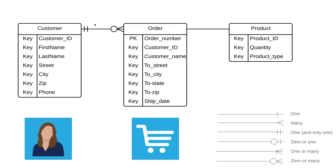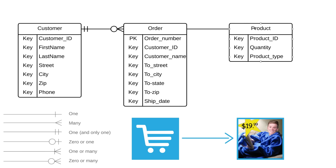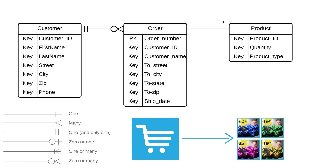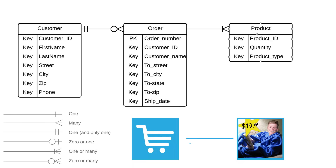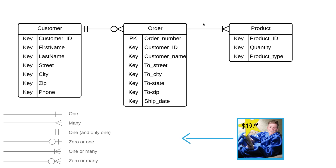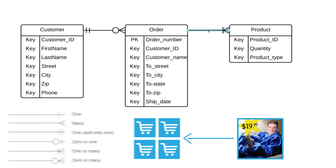Now let's talk about the cardinality between orders and products. A certain order can have how many products? For an order to exist it has to have at least one product, but many different products can be part of that order, so we'll change this notation to reflect that. Then we ask the question in reverse: a product can be a part of how many orders? A product could be a part of no orders, but it could also be a part of many orders, so we're going to use the zero-or-many notation on our diagram.